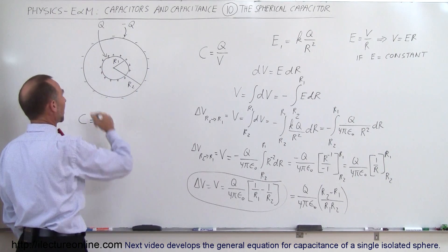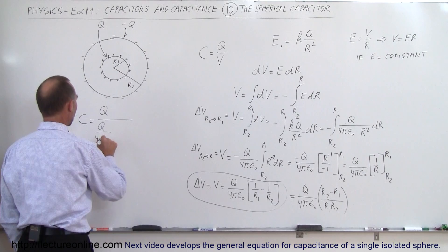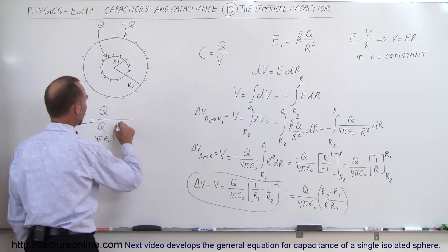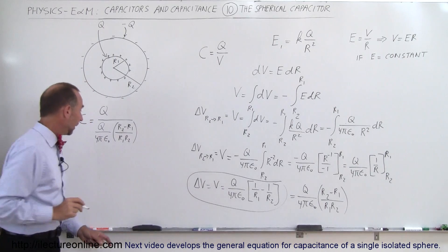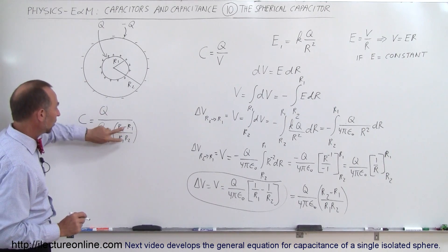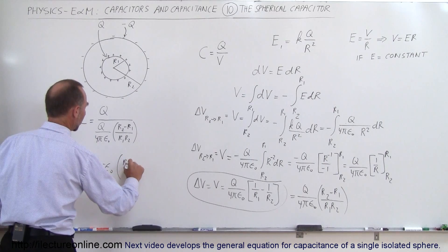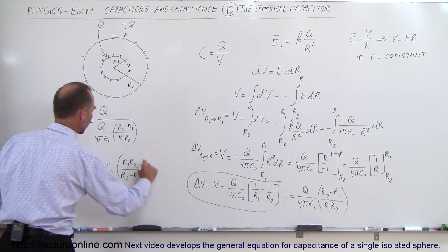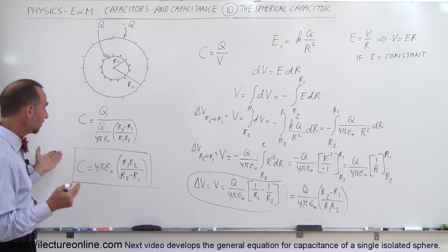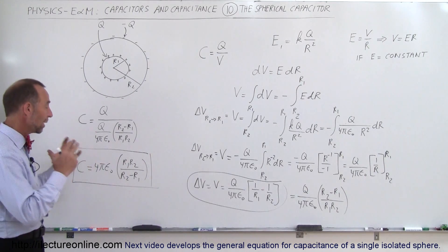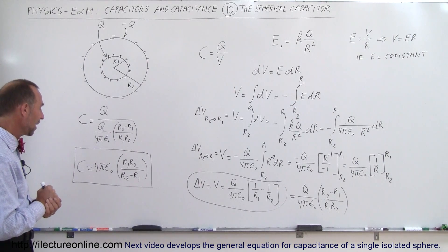Therefore, the capacitance of a spherical capacitor equals the charge divided by the voltage: C equals Q divided by Q over 4π epsilon naught times (R2 minus R1) over (R1 times R2). The Q's cancel and 4π epsilon naught moves to the numerator, giving C equals 4π epsilon naught times R1 times R2 divided by R2 minus R1. Notice that only the dimensions of the spheres matter — the radii R1 and R2 — along with the constant 4π epsilon naught.